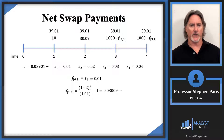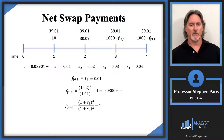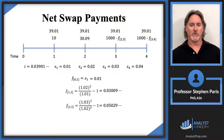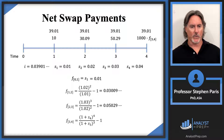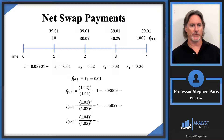For time three, I need the forward rate from time two to time three. When I numerically calculate that, I get about 0.05029, so 1,000 times that is $50.29. Then at time four, I need the forward rate from time three to time four. The four-year spot rate is 4% and the three-year spot rate is 3%. Going through that calculation and multiplying by a thousand gives a $70.58 payment.